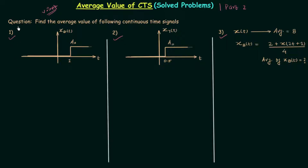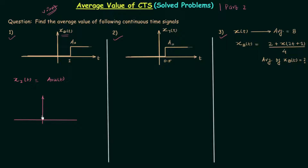Let's begin with the solution of the first problem. The signal is x6t and this is the waveform of the signal. If you remember the first lecture in which we discussed the average value, we took two examples. One was based on non-periodic signals and the signal was x2t, equal to a0·u(t). If you draw the waveform of a0·u(t), it has value a0 for t ≥ 0, and when we calculated the average value of the signal it was equal to a0/2.